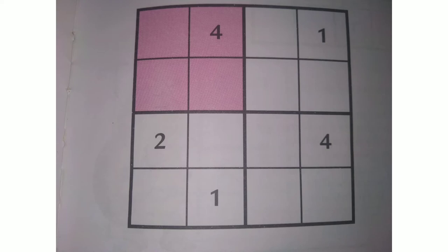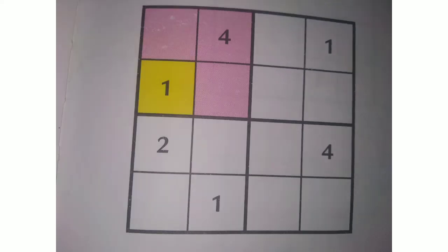As you can see, we have placed number 1 in the first row of the main grid. So in the top-left mini grid's first row, we cannot write number 1. The first row as well as the second column already has 1 in its last cell. Hence, the only possible place for 1 in the top-left mini grid is the cell highlighted in yellow — we can call it a locking cell.